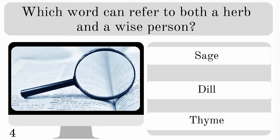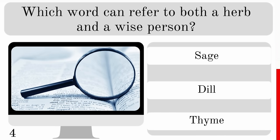Which word can refer to both a herb and a wise person? Is the answer sage, dill or thyme? The correct answer here is sage.